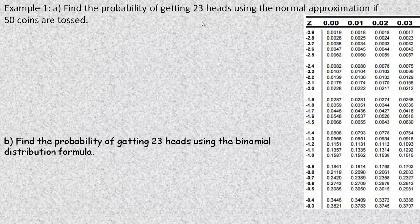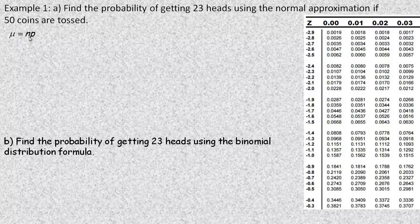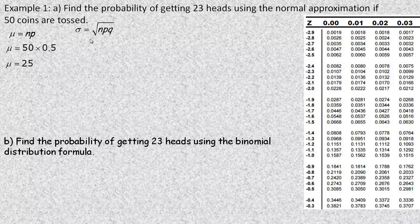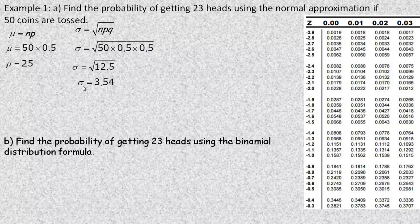In Example 1, find the probability of getting 23 heads using a normal approximation if 50 coins are tossed. The mean is np: 50 times 0.5 equals 25, which is certainly larger than 5 so the test is satisfied. NQ is also 25, so the approximation is fine. The standard deviation is the square root of npq: 50 times 0.5 times 0.5 equals 12.5, and the square root of 12.5 is approximately 3.54.